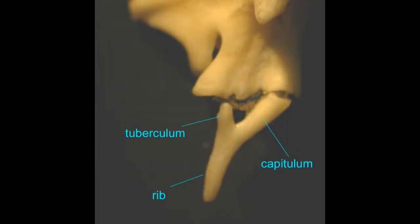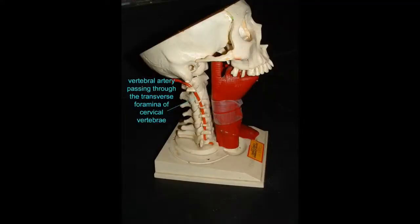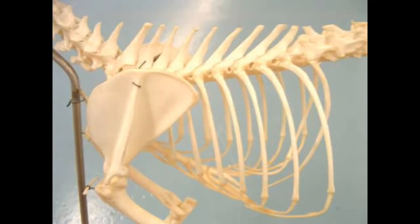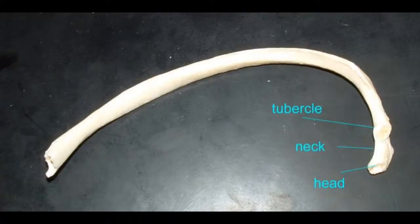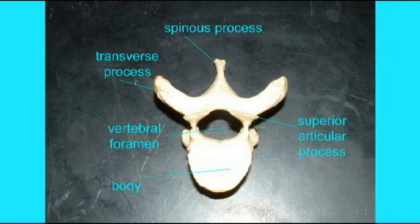The earliest ribs had two heads, which is why the fusion of a rib of this type to a vertebra can produce a hole like the transverse foramen in cervical vertebrae in mammals. Later ribs could be modified, so that two-headed ancestral form is no longer evident in mammalian ribs.